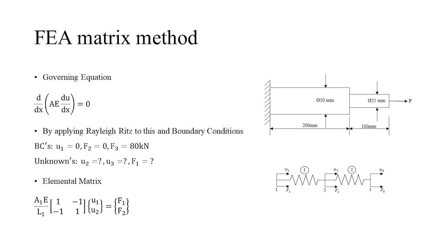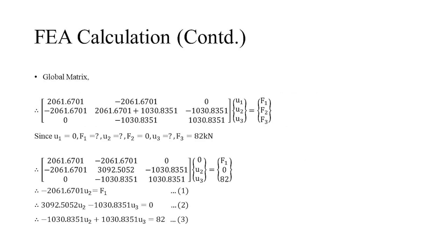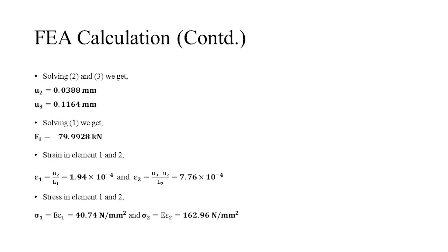At node two, there is no external force acting, therefore F2 is zero and U2 is unknown. At node three, the force is given as F3 and the unknown is U3. We write the elemental matrix for individual elements. Note: do not add boundary conditions to the elemental matrix. After the elemental matrix, we assemble the global matrix, combine elements one and two, and apply the boundary conditions. This gives a set of equations solved simultaneously to find unknowns U2 and U3. The reaction force is calculated using equation one, and from deformation we find strain and stress on each element.